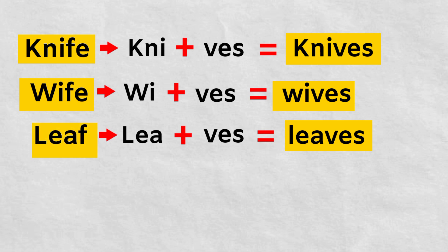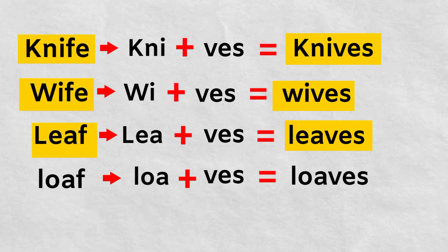Let's take one more example. Loaf. Look at the last alphabet. It is F. So we will remove the F and we will add VES to make it into its plural form. Loaves. L-O-A-V-E-S. Loaves, which is the plural form of loaf. I hope you have understood.